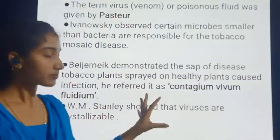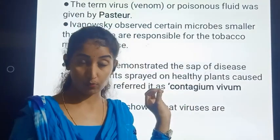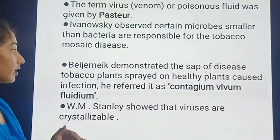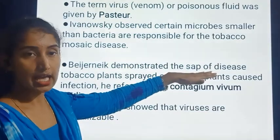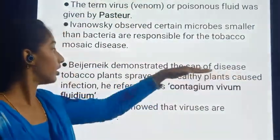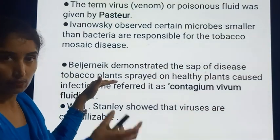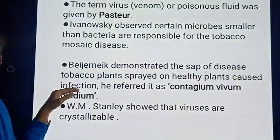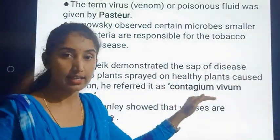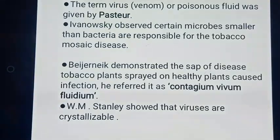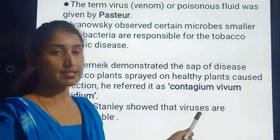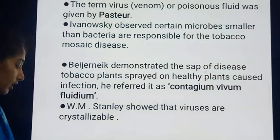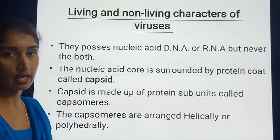From one infected tobacco plant to the next, the disease was spread. When the sap — the fluid taken from diseased tobacco plants — was sprayed on a healthy plant, it caused infection to the healthy plant. That is why he referred to it as contagious viva fluidum. WM Stanley showed that viruses are crystallizable. These are the historical findings regarding viruses.